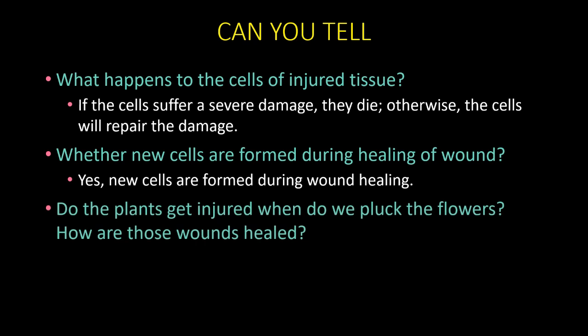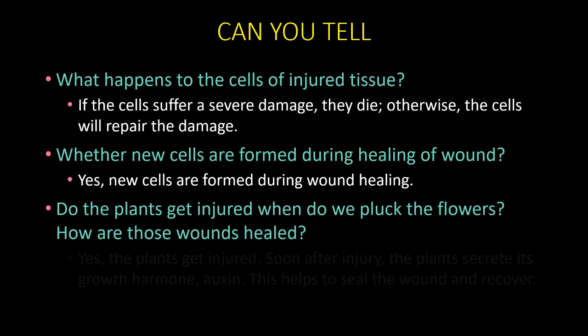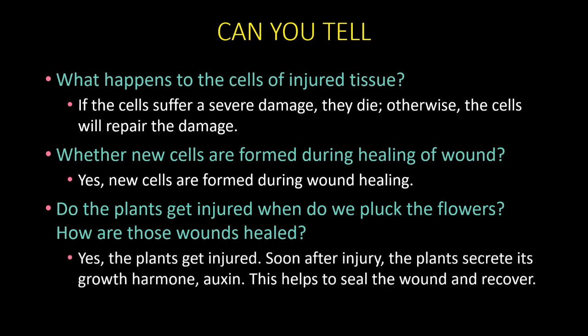When we pluck flowers from plants, the plants do get injured. You can see this by a small amount of water-like substance forming on the surface soon after you pick the flower — it means the plant is wounded. But soon after the injury, the plant secretes its growth hormone, that is auxin, which helps to seal the wound and recover.